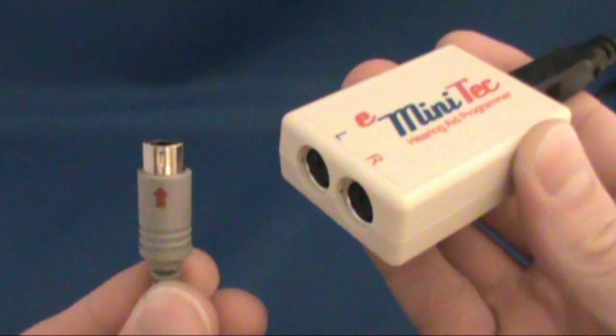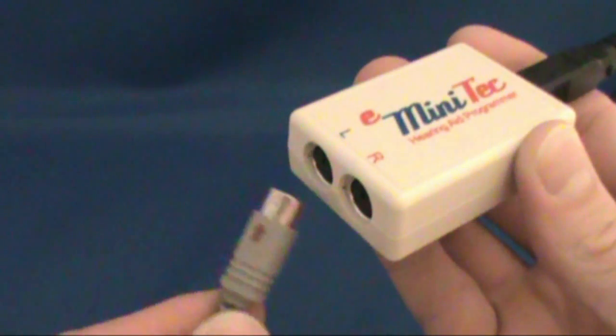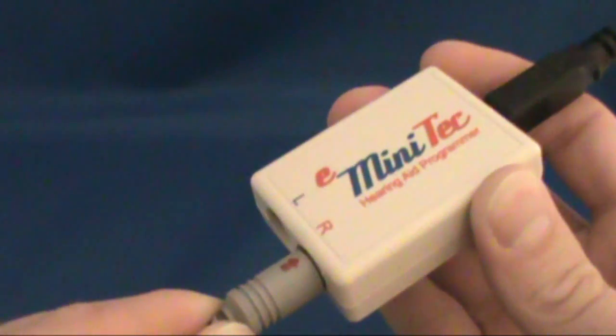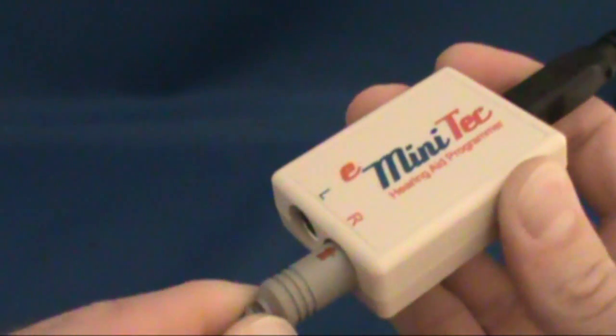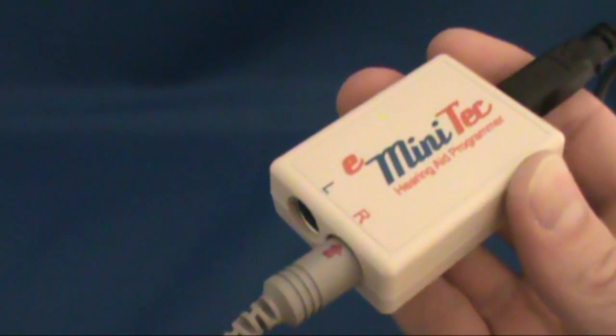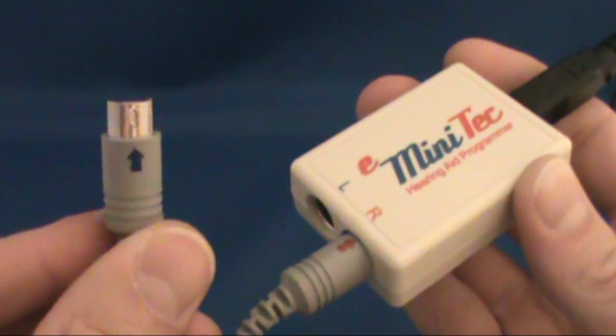Next we will connect the hearing aid programming cables to the e-minitech. The e-minitech has two ports. One is marked with a red R for the right hearing aid, and the other is marked with a blue L for the left ear hearing aid.